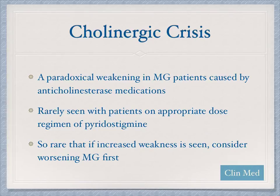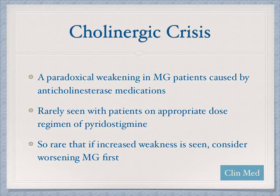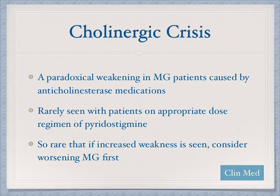A major side effect of acetylcholinesterase medication is cholinergic crisis, a paradoxical worsening of weakness in myasthenia gravis patients caused by the medication. This is extremely rare — if you see a patient with increased weakness while on the medication, you should consider that the myasthenia gravis is getting worse long before considering cholinergic crisis. It's more likely the disease is worsening than that a cholinergic crisis is occurring.